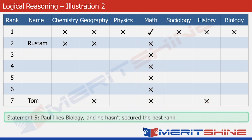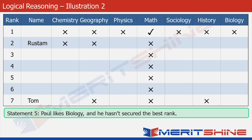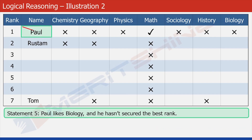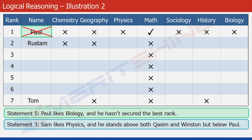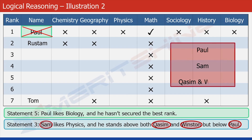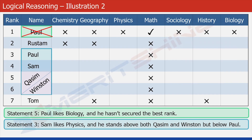Statement five tells us that Paul hasn't got the best rank — that's rank one. So let's put Paul's name beside rank one momentarily and put a cross over it. Now let's look at statement three, which compares Sam, Qasim, Winston, and Paul. It tells us that Paul comes above Sam and Sam comes above both Qasim and Winston. Looking at the table, we realize that the only positions where these four persons can be fitted are the highlighted cells. We fill it up accordingly, keeping the relative positions of Qasim and Winston open since we haven't yet figured out who among the two got a better rank.